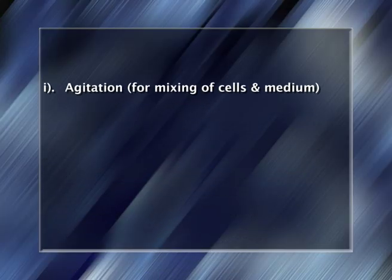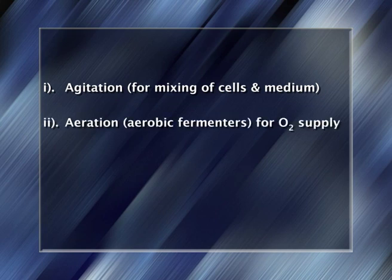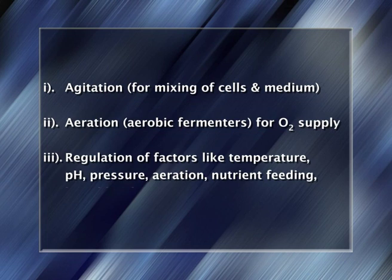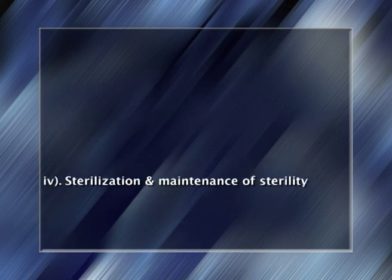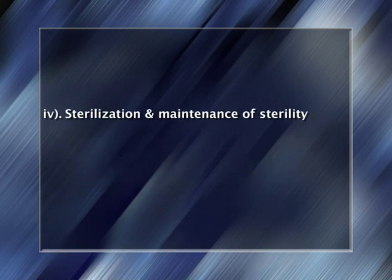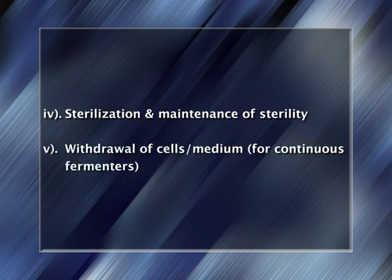Design of fermenters: all bioreactors deal with heterogeneous systems involving two or more phases, such as liquid, gas, and solid. Chemical engineering principles are employed for design and operation of bioreactors. A bioreactor should provide: agitation for mixing of cells and medium; aeration for oxygen supply in aerobic fermenters; regulation of factors like temperature, pH, pressure, aeration, nutrient feeding, and liquid level; sterilization and maintenance of sterility; and withdrawal of cells or medium for continuous fermenters.